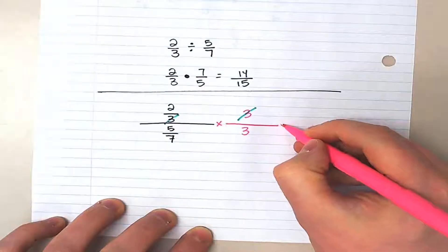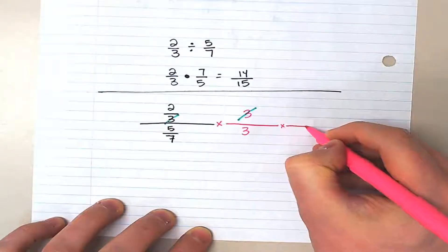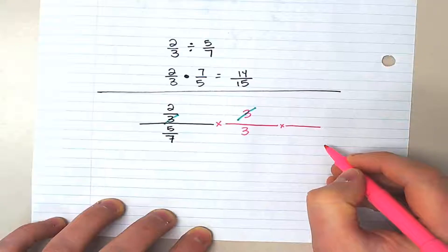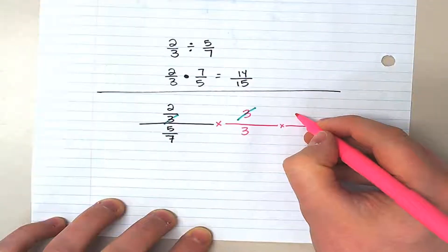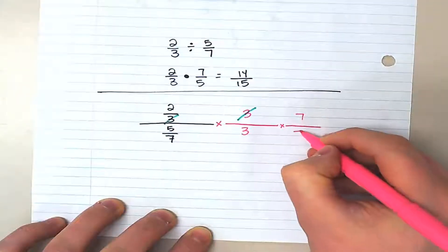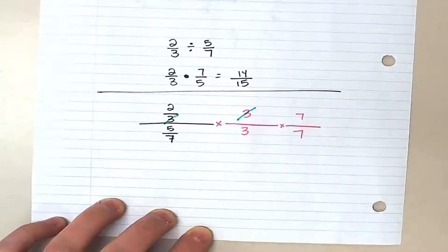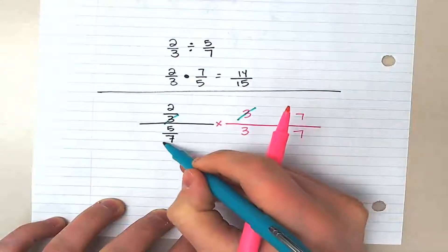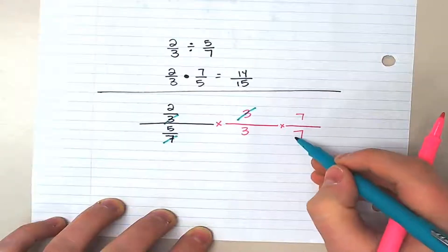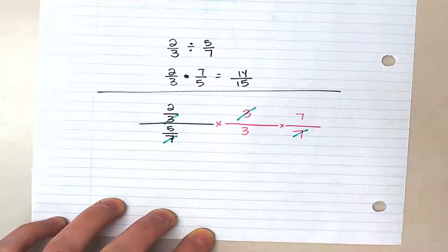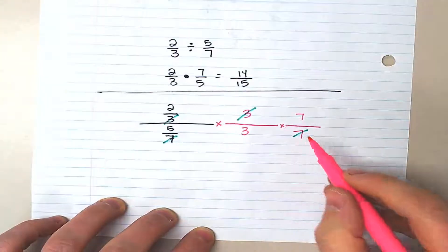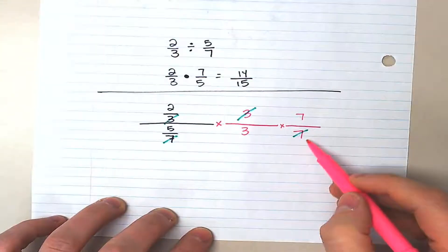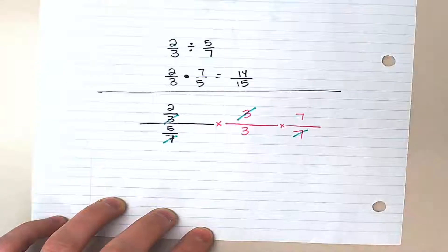We're also going to multiply this by another fraction — seven over seven. Why? Because now we can cancel the seven on the bottom with that seven that's kind of on the top of the bottom fraction.